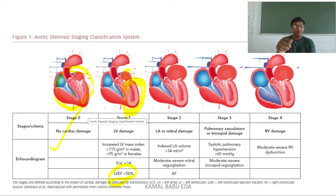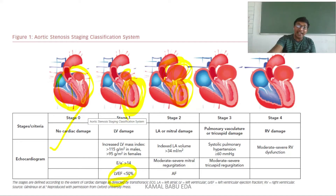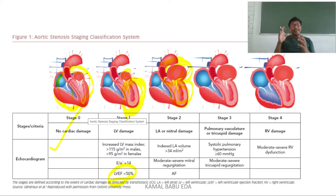In Stage 2, left atrial hypertrophy develops alongside left ventricular hypertrophy. The left atrial volume increases to greater than 34 mL/m². Moderate to severe mitral regurgitation is also observed. Because the aortic valve stenosis prevents sufficient blood from entering the aorta, increased pressure in the left ventricle damages the mitral valve, causing backflow of blood from the left ventricle into the left atrium — mitral regurgitation.